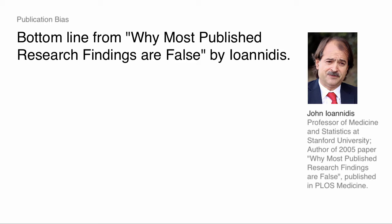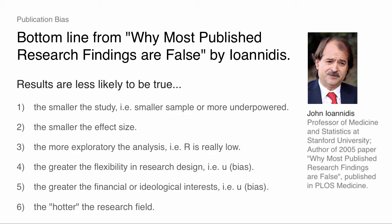Let me go through quickly his bottom line, and then we'll get to the next couple studies. What are the different comparative statics in his model? Results are less likely to be true the smaller the studies — meaning smaller sample size. The more underpowered they are, if you're really underpowered you really can't detect an effect, so almost anything is a false positive.